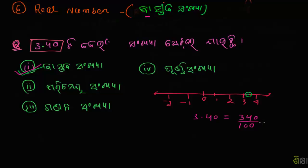So this is the format of m by n. If n is not equal to 0, then this is the format of m by n.